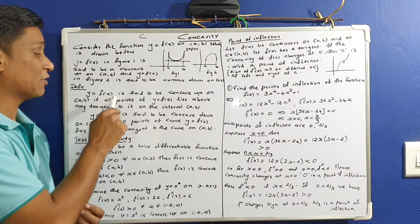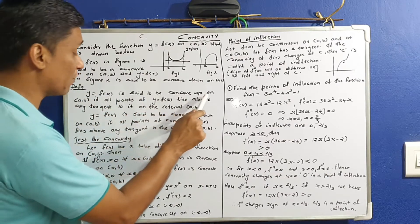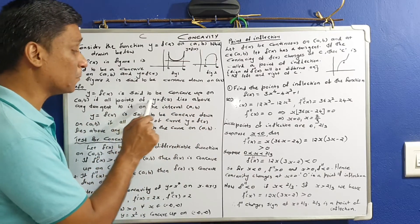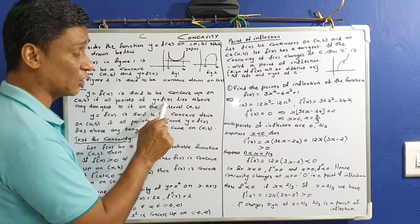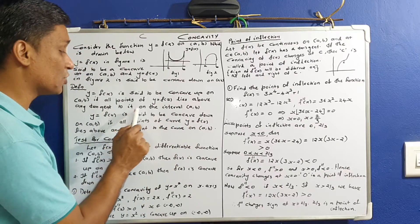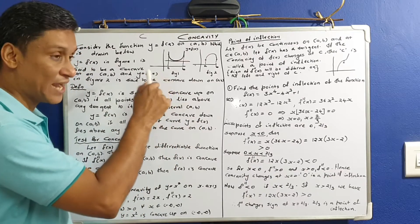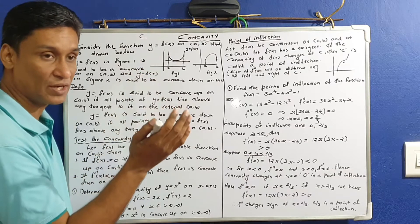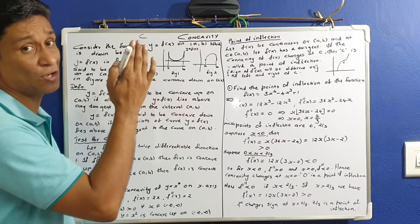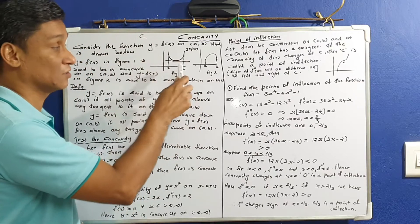If y equals f of x is said to be concave up on ab, if all points of y equals f of x lie above any tangent to it on the interval ab, at any point in time, a tangent will be drawn through all of them.